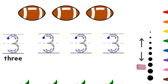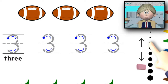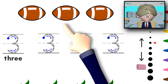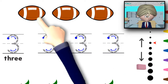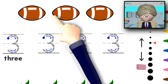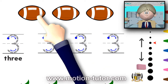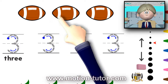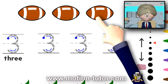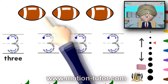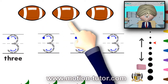Let's look at the number three. So, let's see what three is. Up here, we have three footballs. One, two, three. So, this is how three objects look like — three footballs.